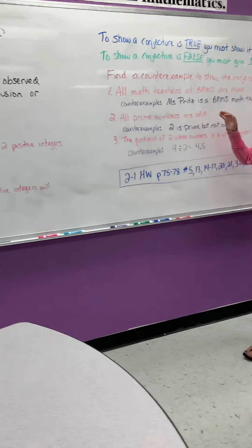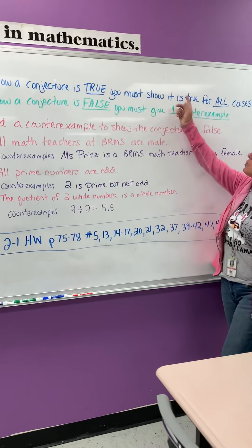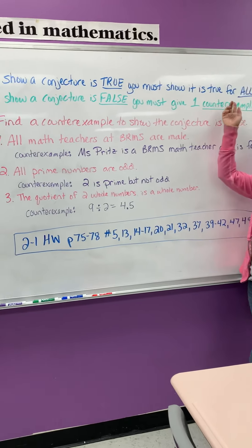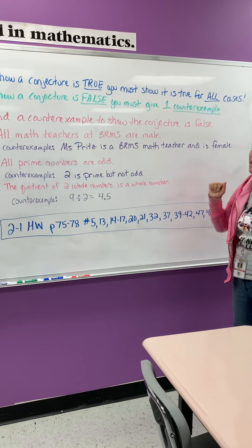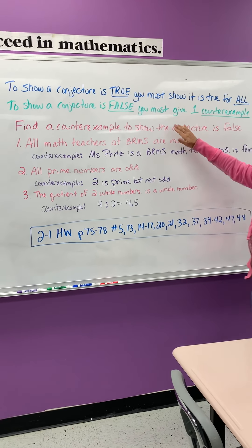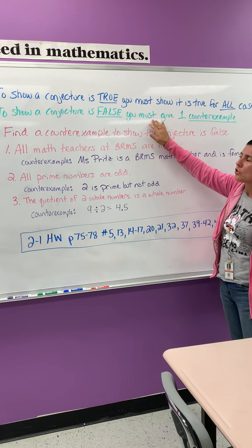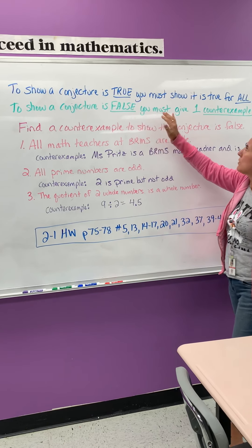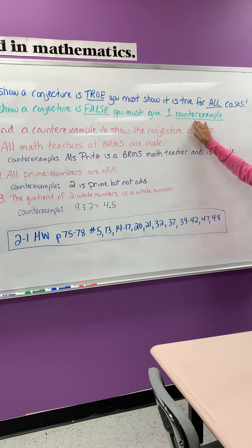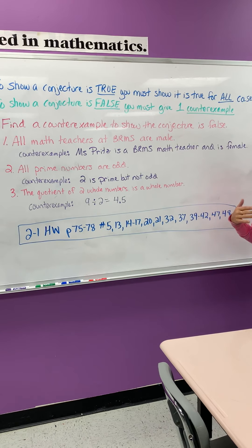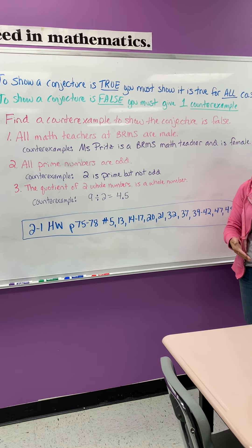To show that a conjecture is true, you have to show it's true for all cases to prove that it is true. That's really hard to do. This one is a little bit easier. To show a conjecture is false, all you have to do is give one counter example. So a counter example just means an example that shows that that statement is false.